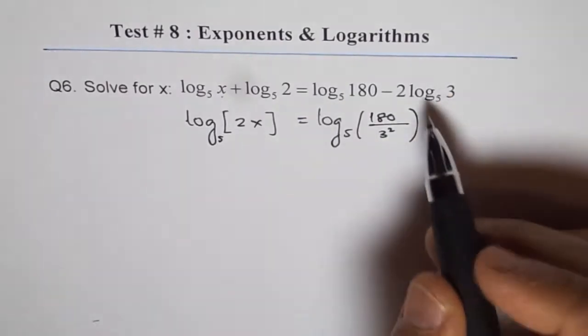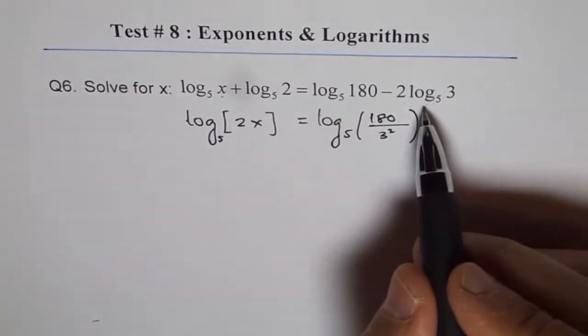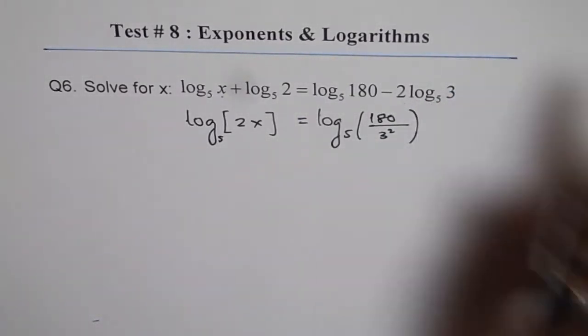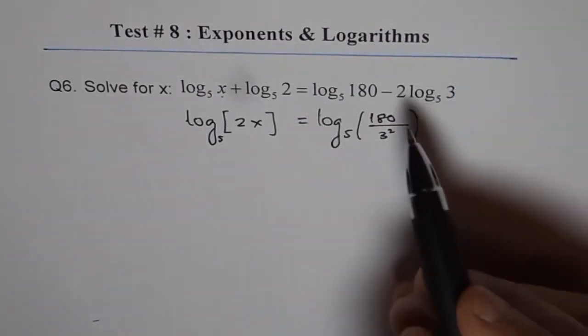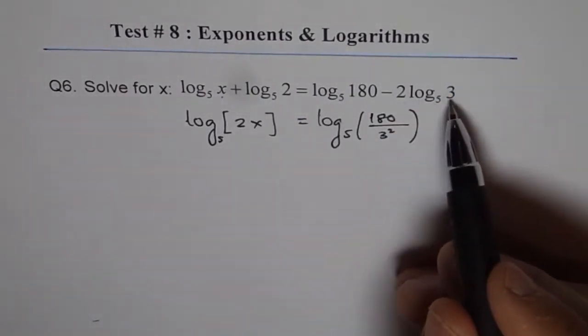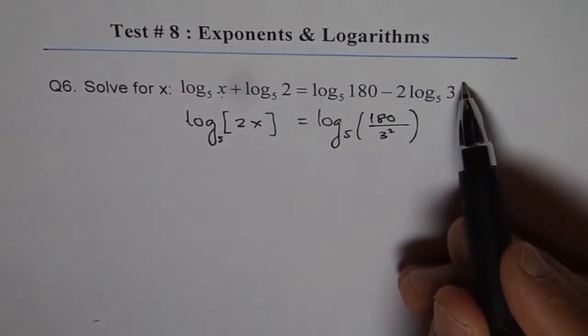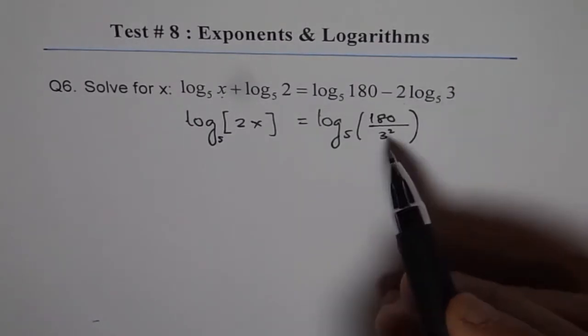So this way, from using the power rule, the 2 times log base 5 of 3 can be written as log to the base 5 of 3 squared. And then we'll get to this step.